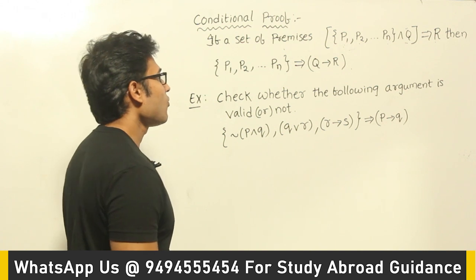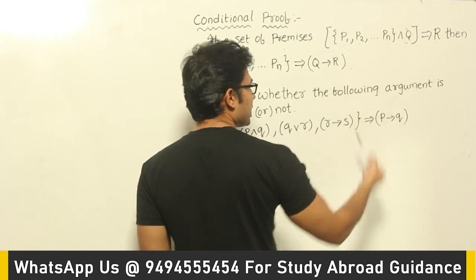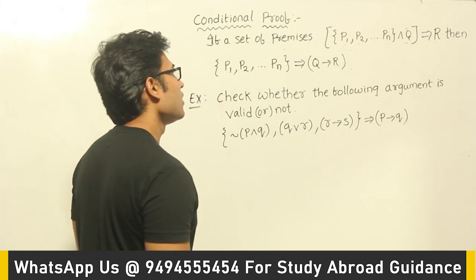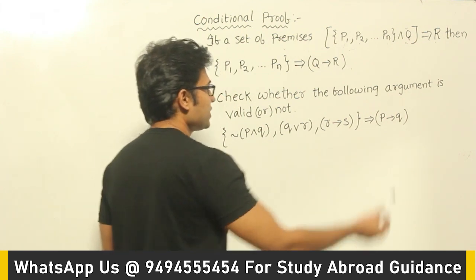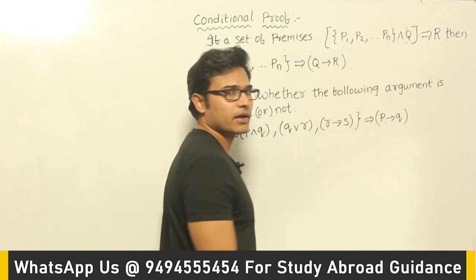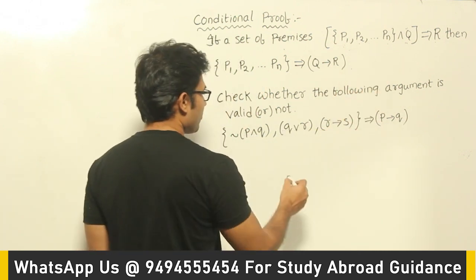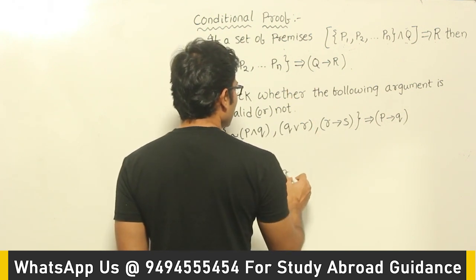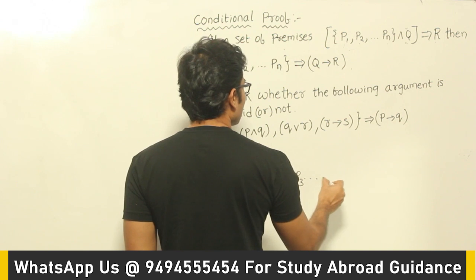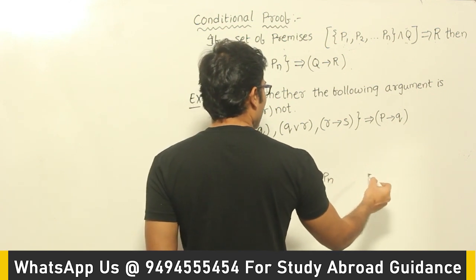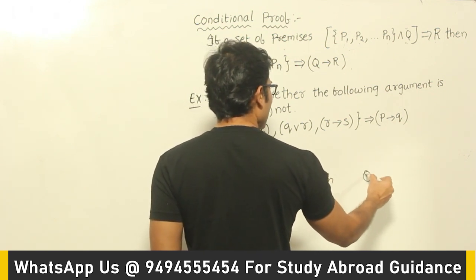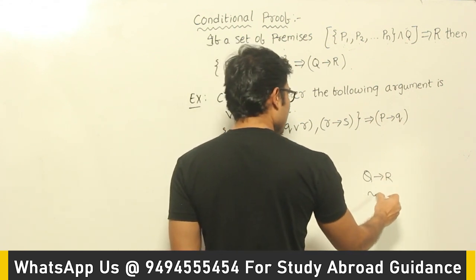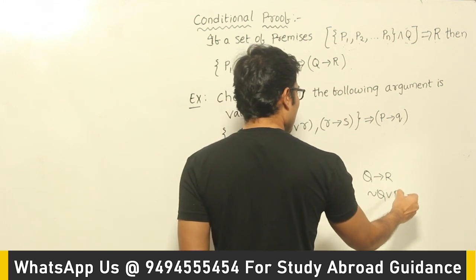Now why is this useful? We shall see an example of why it is useful in solving arguments. But before that, let's see why this is true. We have premises p1, p2, p3, ..., pn, and the conclusion we got is q implies r. Now you know that this conclusion can be written as negation q or r.